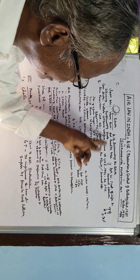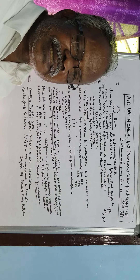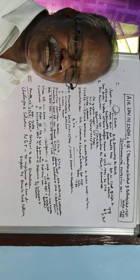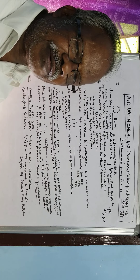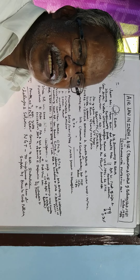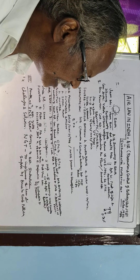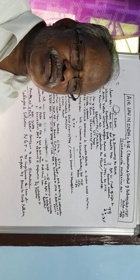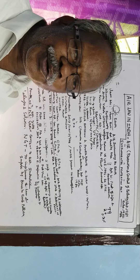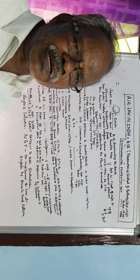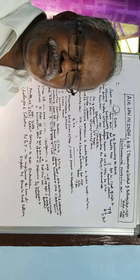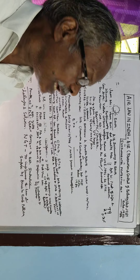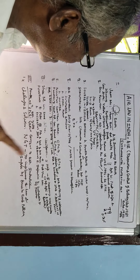Article 21 of the Constitution protects the life and personal liberty of an individual. Protection has been laid down in the constitution to provide personal liberty and protection to life. The air should be clean and pure so that normal breathing is possible and life activity can be normal.